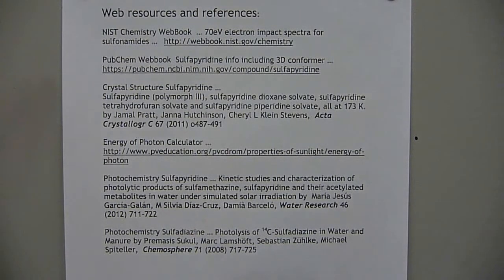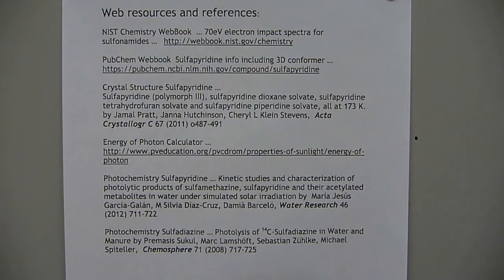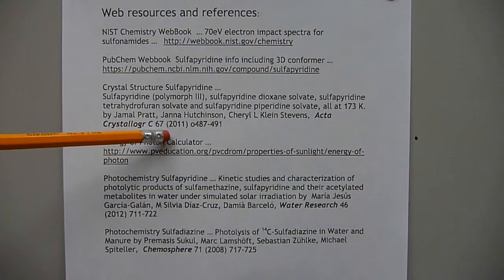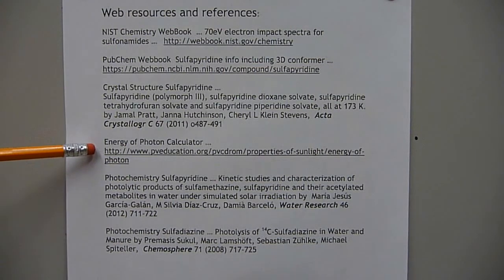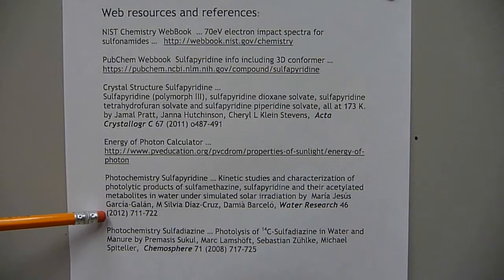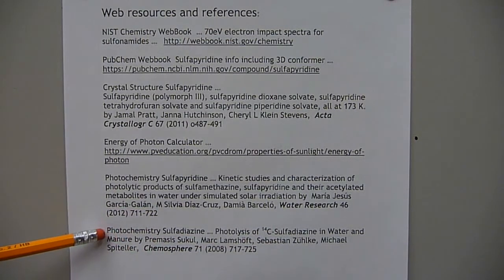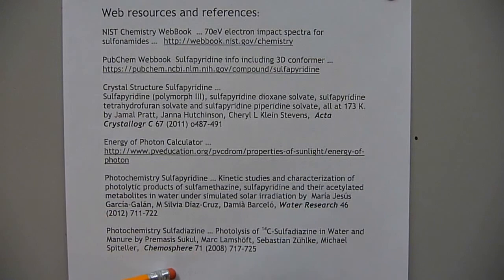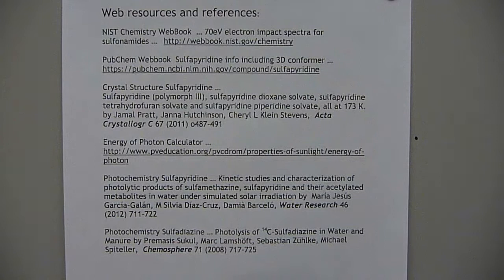For web resources and references: the NIST chemistry web book has many 70 eV electron impact mass spectra for sulfonamides, and you'll see SO2 expulsion in their spectra, some exceedingly significant. PubChem has the sulfapyridine 3D conformation graphic. The low temperature crystal structure for sulfapyridine was published in 2011. The photochemistry of sulfapyridine was in a 2012 water research journal. The photochemistry involving sulfadiazine - a very prevalent antibiotic especially in animal feed - was published in 2008.